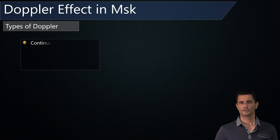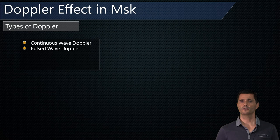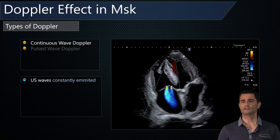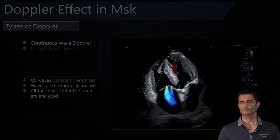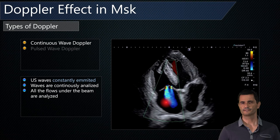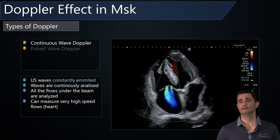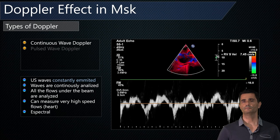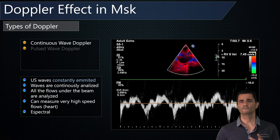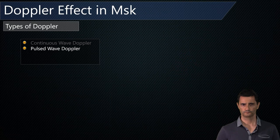What types of Doppler do we have in MSK? We have continuous wave Doppler and pulsed wave Doppler. In continuous wave Doppler, the probe continuously emits and continuously receives the signal. All the flow below the beam is analyzed. There is no limit on the velocity of the flow, so it's indicated for very high speed flows — for example, the heart. You can also check the spectral curve of the flows. However, this continuous wave Doppler will be used in cardiac ultrasound, not in MSK ultrasound.